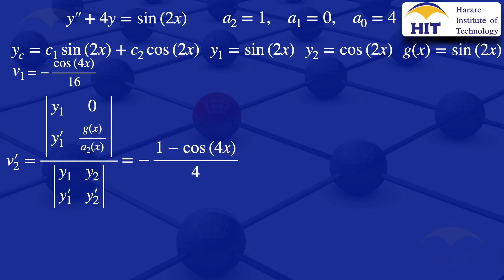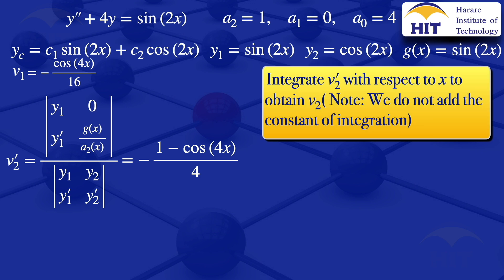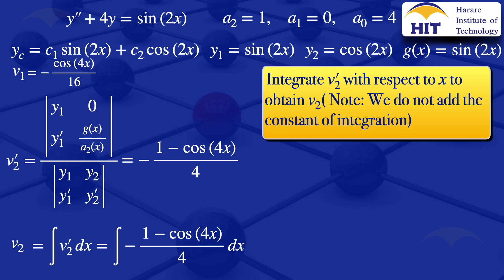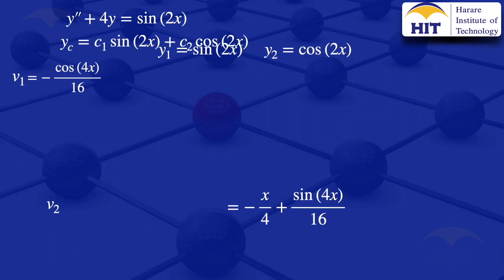To obtain V2 we integrate V2' with respect to x, without adding the constant of integration. So V2 = ∫V2' dx = ∫-(1 - cos(4x))/4 dx, which gives V2 = -x/4 + sin(4x)/16.